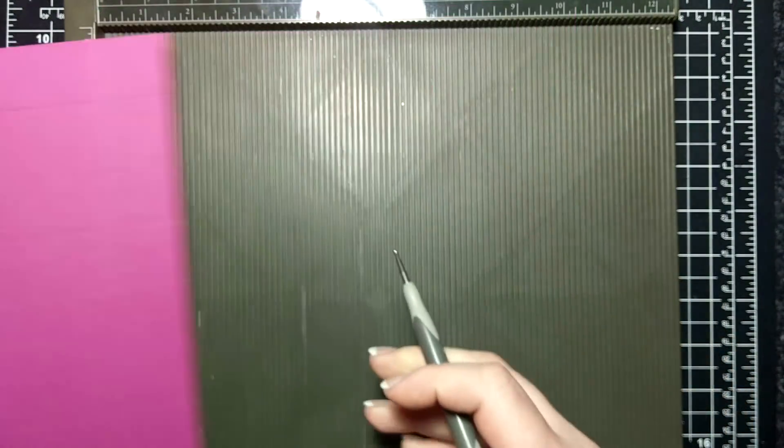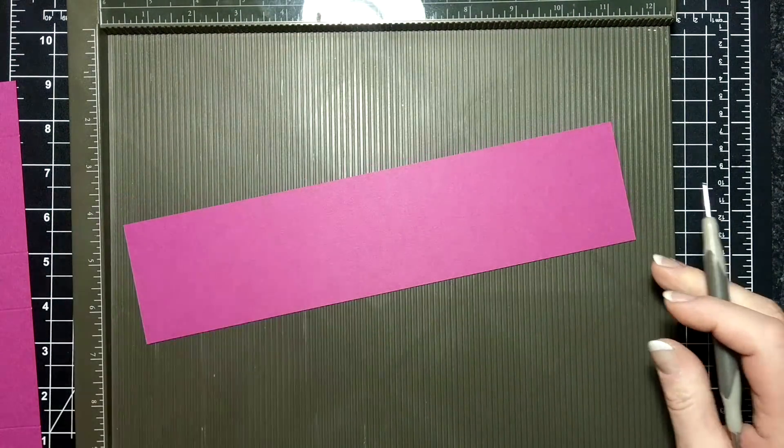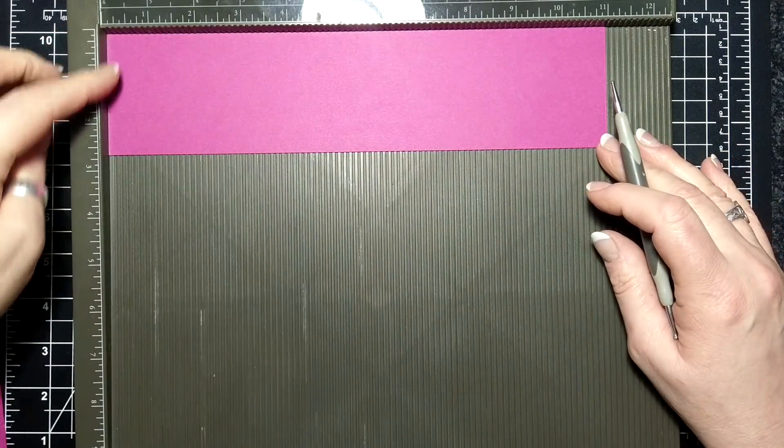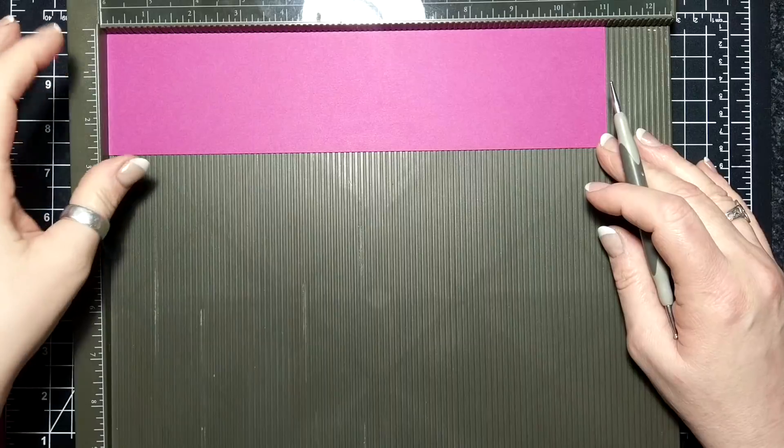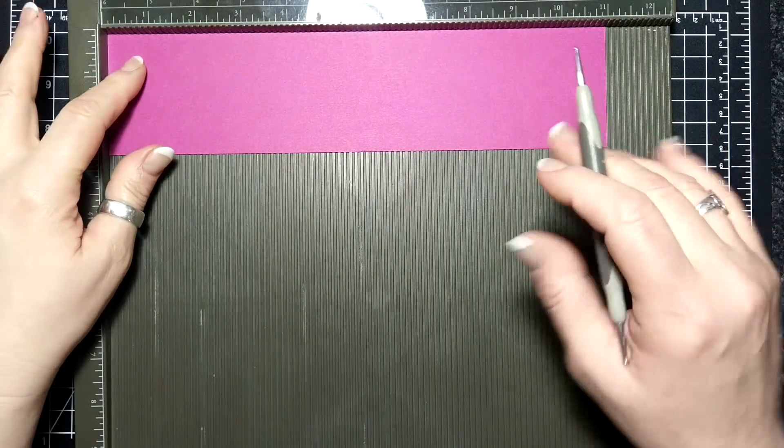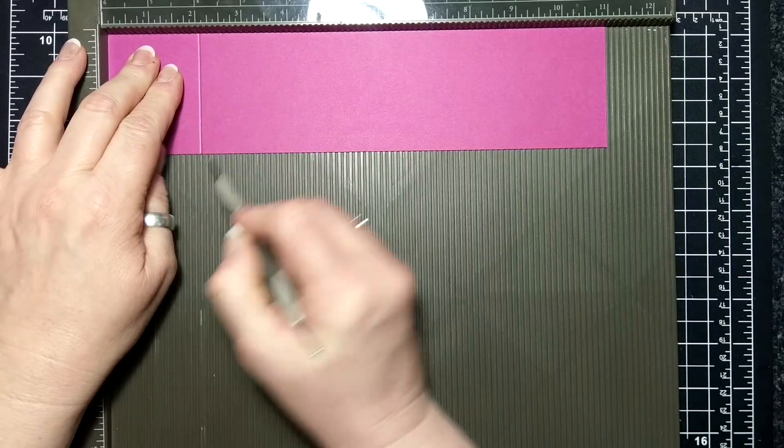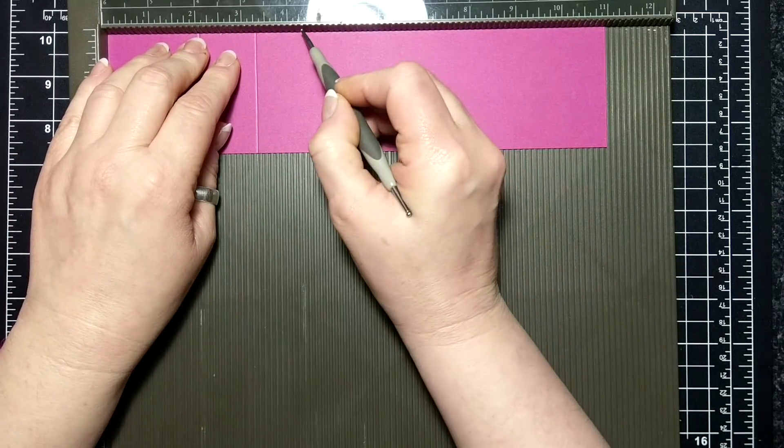Alright, so that's for the box. Then we have the little insert here, and the insert is two and five eighths by eleven, and I am going to score at two, three and a quarter, four and a half,